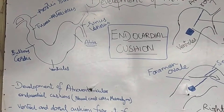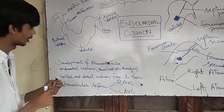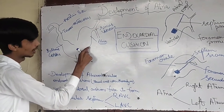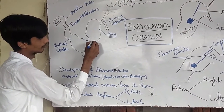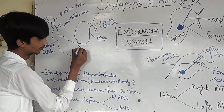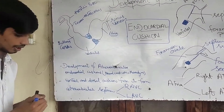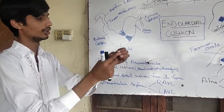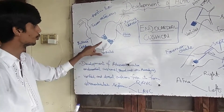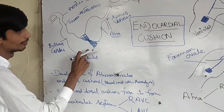Before atrial development begins, there is development of the atrioventricular endocardial cushion. Between the atria and the ventricles, from the ventral and dorsal sides, endocardial cushions develop — composed of the underlying mesenchyme and neural crest cells. In the heart tube, these cushions from the ventral and dorsal sides fuse in the center, with one space remaining on each side.